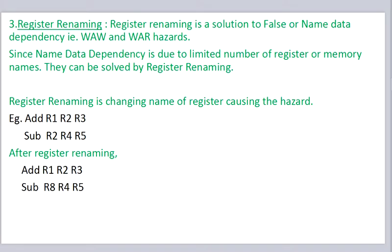Next is register renaming. Register renaming is a solution to false or name data dependency, that is WAW and WAR hazards. Since name data dependency is due to a limited number of register or memory names, they can be solved by register renaming, which means changing the name of the register causing the hazard. In this example there is a write after read hazard, and by renaming the register r2 in the second instruction we can remove this hazard. That's all for this video; we will continue our discussion in the next video.